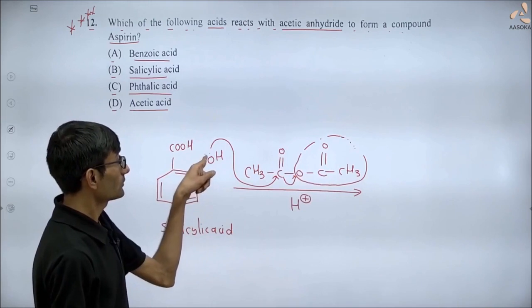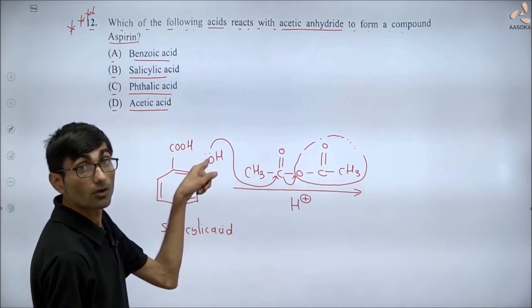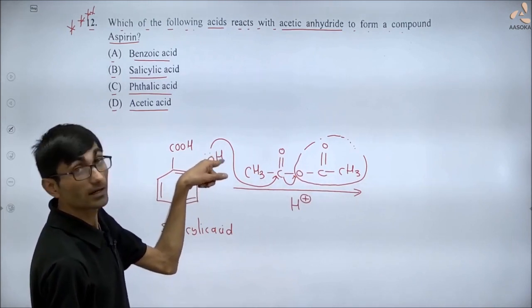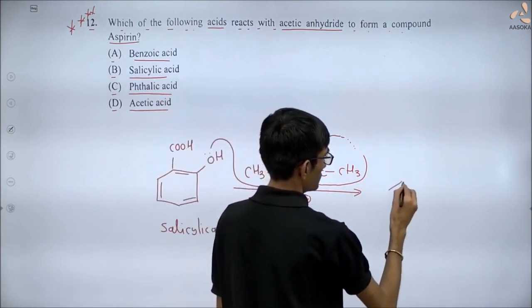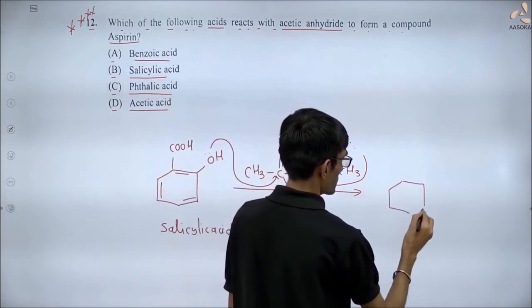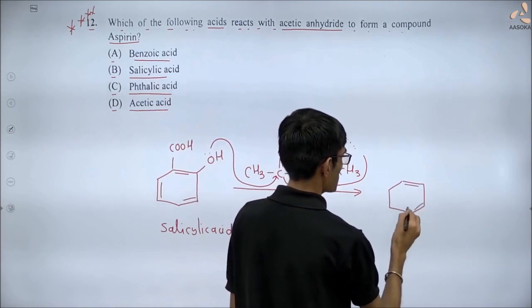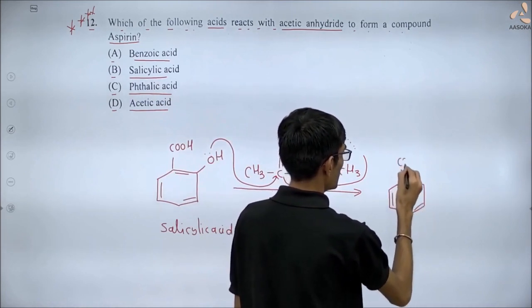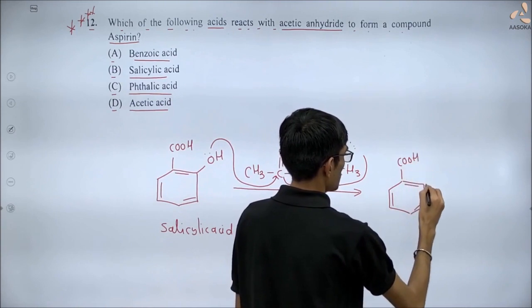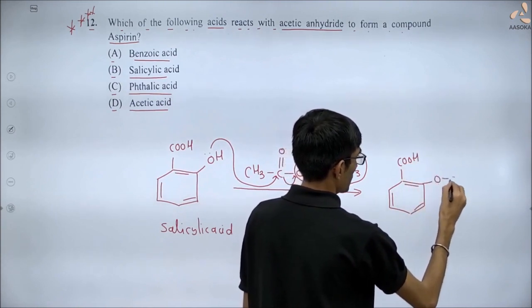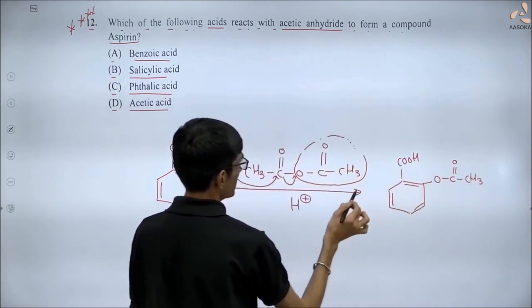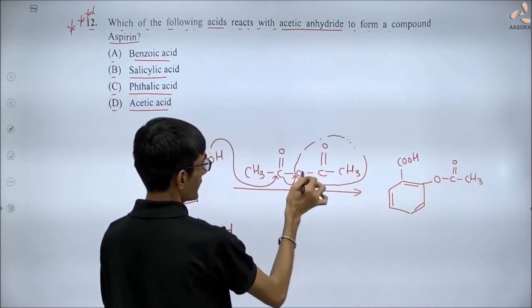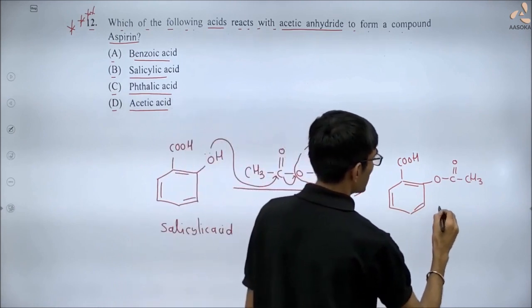Now since oxygen donated its lone pair, oxygen also becomes positive. And the positive oxygen will finally give away the hydrogen. This makes the final product. Here COOH, oxygen, and connected to this COCH3. Along with this the side product will be CH3-CO-O negative which will then combine with H+ to make...